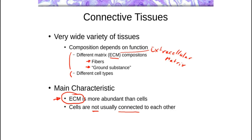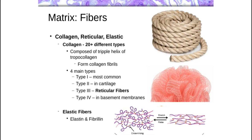Let's take a look at the matrix components first, and then we'll talk about cells. The ECM is divided up into fibers and ground substance. When we talk about fibers, we're mainly talking about collagen — collagen fibers, reticular fibers, and elastic fibers are the fibers we're generally talking about when we discuss matrix fibers.